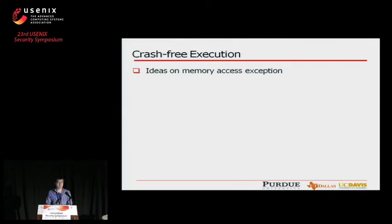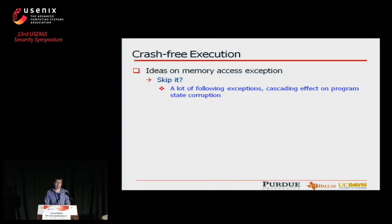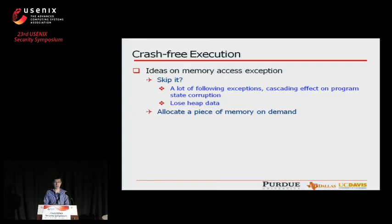What should we do about the previous exception? In the early stage of our project, we simply skipped instructions that contained invalid memory access. However, we found that there are a lot of cascading exceptions, and we need to skip them all. Even worse, since most of the exceptions happen on the heap, we lose a large amount of heap data. Finally, we decided to allocate a piece of memory on demand and fix the corrupted pointer. However, it is not sufficient to just fix the corrupted pointer itself, because there are other correlated pointers and we need to fix them all.